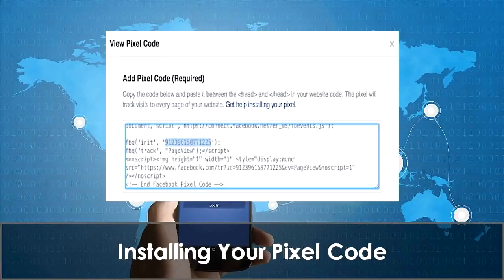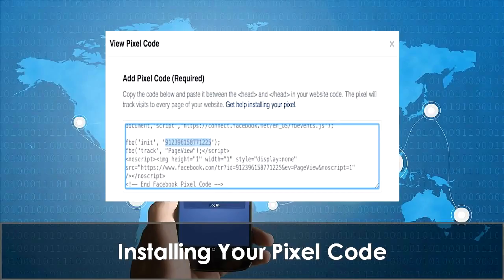A pop-up will appear prompting you to install your pixel code. To install the pixel code, you can either use a tag manager tool or other e-commerce sites that offer Facebook integration to upload your pixel code. If your site is on Shopify, the process is much easier. Scroll through the code and search for a set of 15 numbers — that will be your pixel ID. Copy this number.